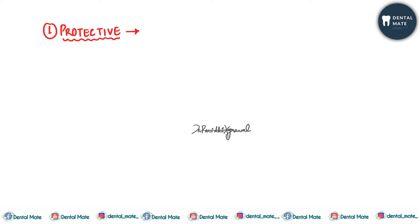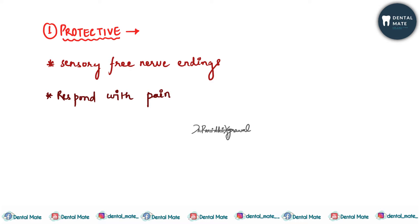The pulp is the vital tissue of the tooth. The protective function works through numerous sensory nerves — free nerve endings — present in the pulp. They respond with pain to all stimuli such as heat, cold, pressure, operative cutting procedures, and chemical agents. They also initiate reflexes which control the circulation in the pulp.